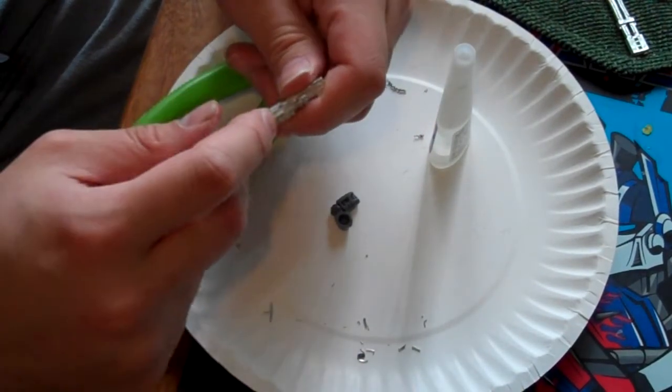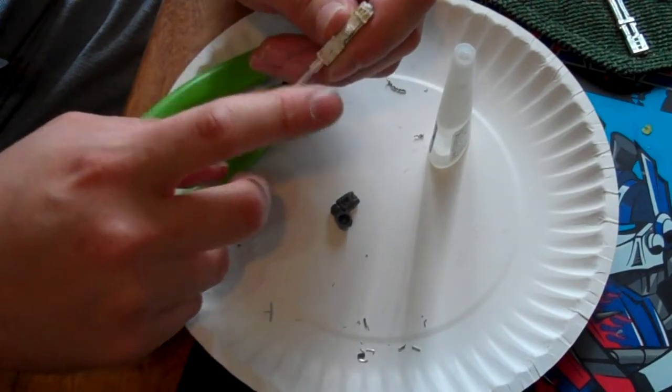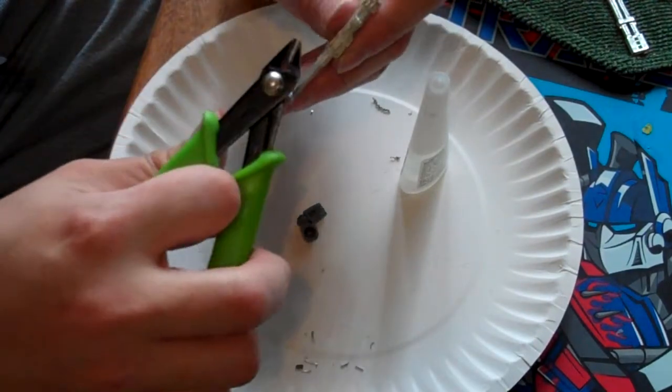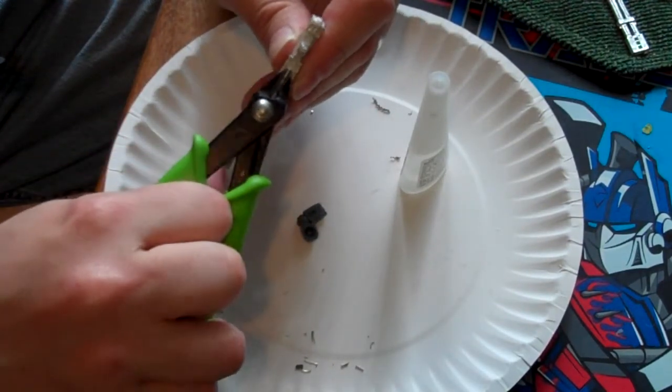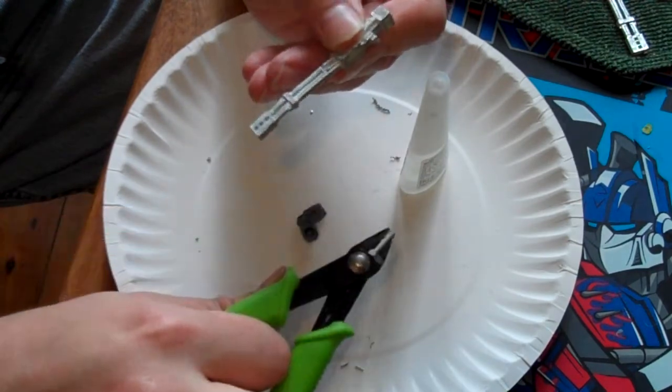So, locate the little nub on the bottom that normally goes into the shoulder piece on the battlesuit itself. Take your clippers and snip as flush as you can. There we go. Right up against there.